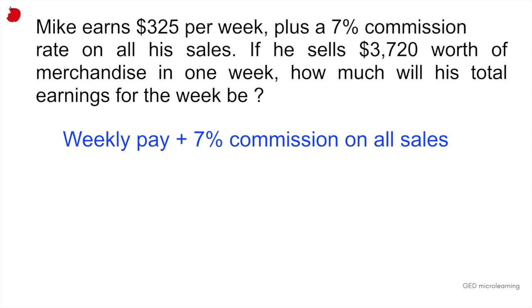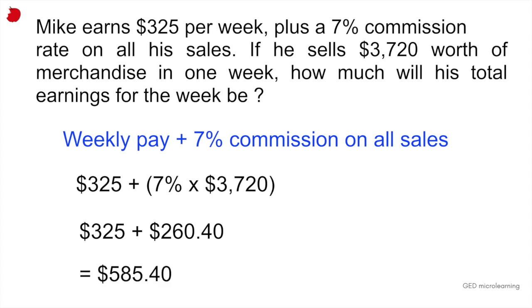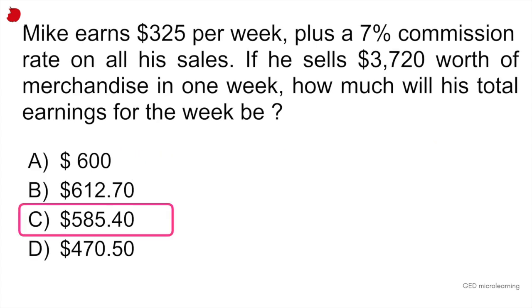So you would set up your equation like this. We have $325 for the weekly pay, and then to find out the commission rate, you multiply 7% times what he earned this week, which was $3,720. So his commission is $260.40, and all you have to do now to find out how much he made this week is add that to his fixed weekly pay of $325. That gives you $585.40, which is answer C.